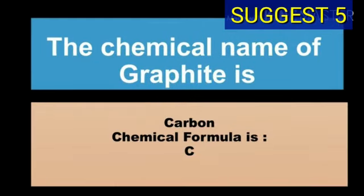The chemical name of graphite is carbon and chemical formula of graphite is C.